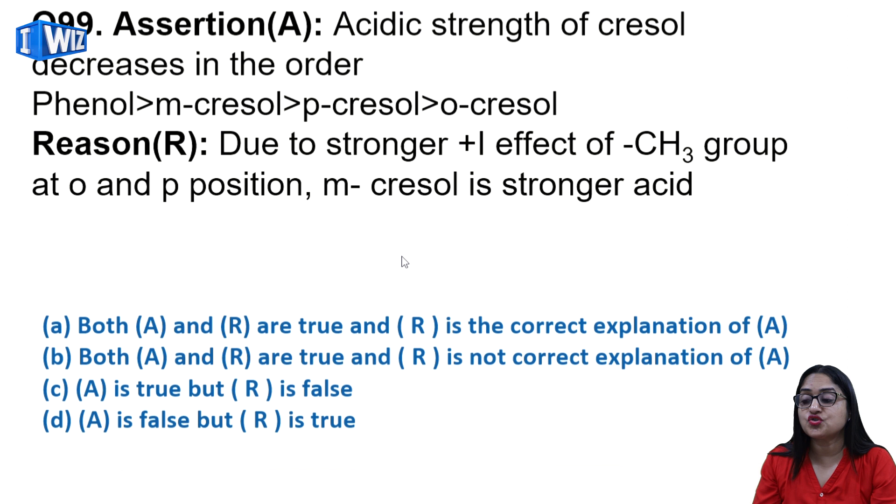99th question: acidic strength of cresol decreases in the order phenol, then meta-cresol, then para-cresol, and then ortho-cresol. Reason is due to stronger plus-I effect of CH3 at ortho and para positions, meta-cresol is stronger acid. So both assertion and reason are true and reason is the correct explanation of the assertion.